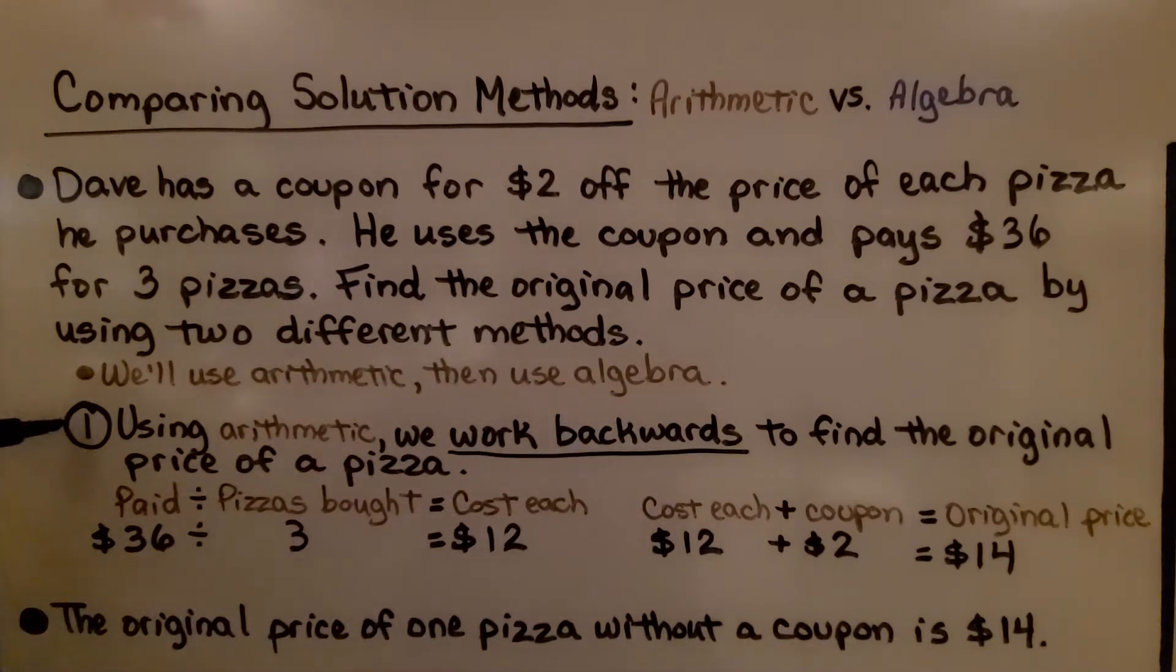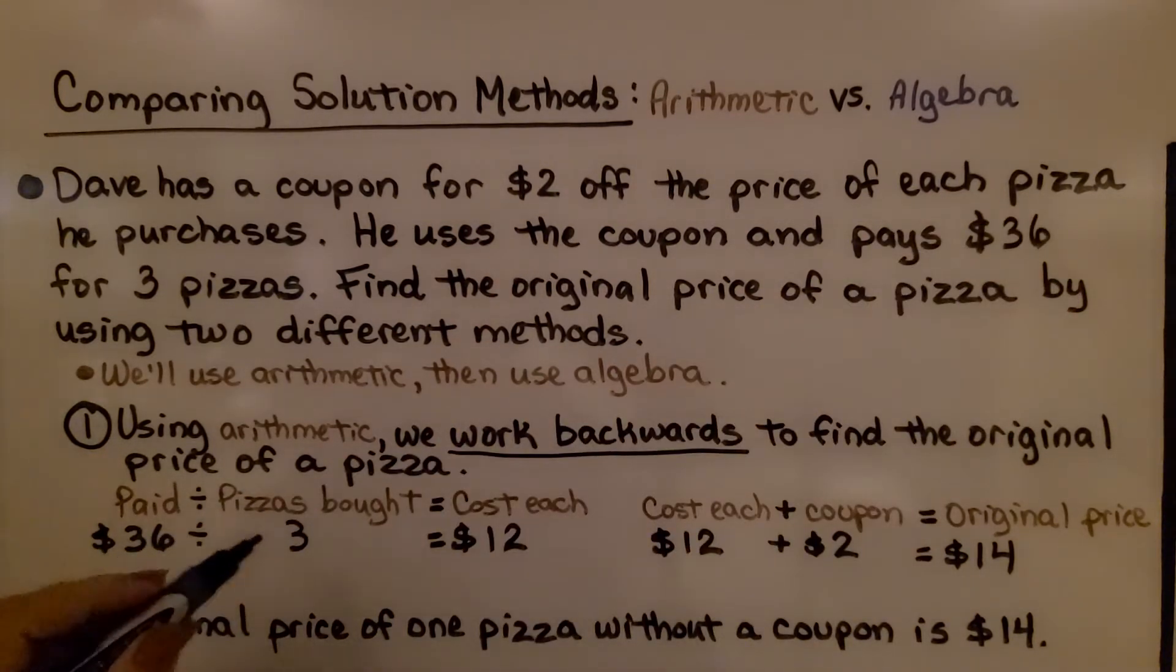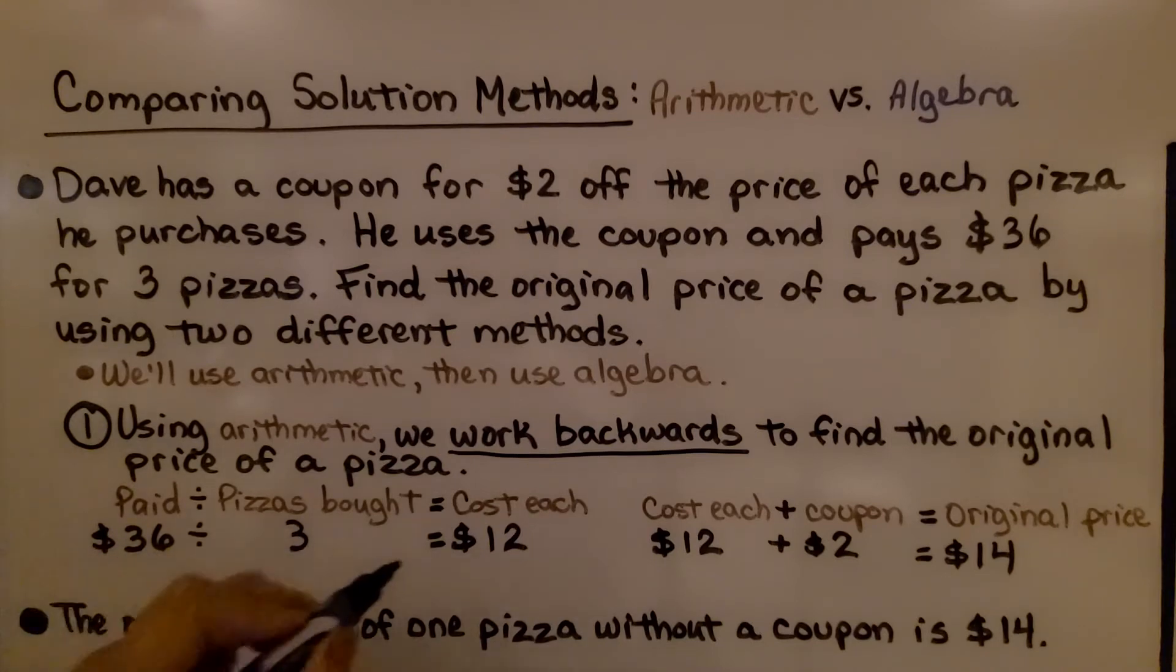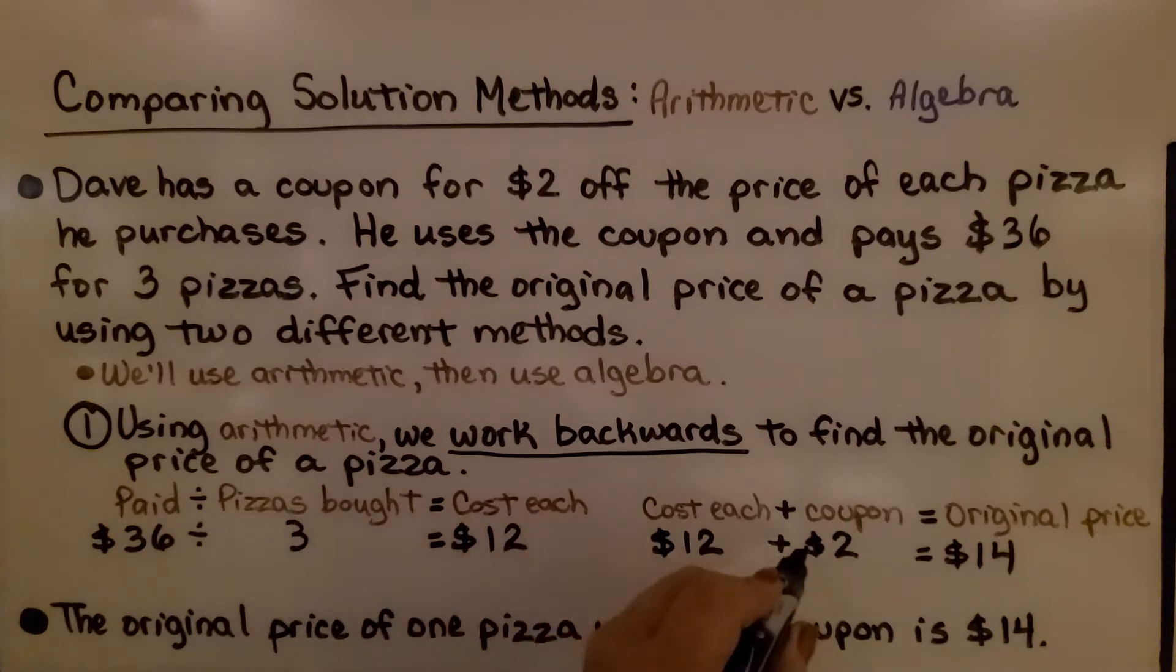The first method, using arithmetic, we're going to work backwards to find the original price of a pizza. We start with the whole amount, the $36 that he pays, and we divide it by the 3 pizzas he bought. That's going to tell us that they each cost $12. Now, we need to add the coupon back on. We find that the original price is $14. The original price of one pizza without a coupon is $14.